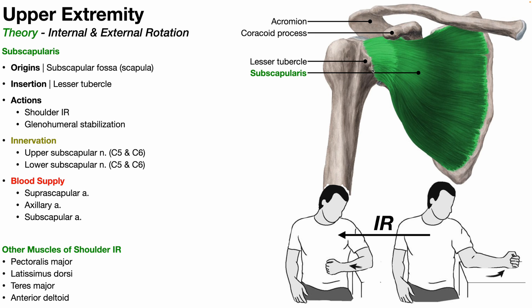All the other rotator cuff muscles attach on the greater tubercle at the superior, intermediate, and inferior facets. One action of the subscapularis is glenohumeral stabilization — this is an important point for all rotator cuff muscles. They all play a role in stabilizing the humeral head within the glenoid fossa of the scapula. If these muscles get weak, it makes it more likely there will be a subluxation of the shoulder.